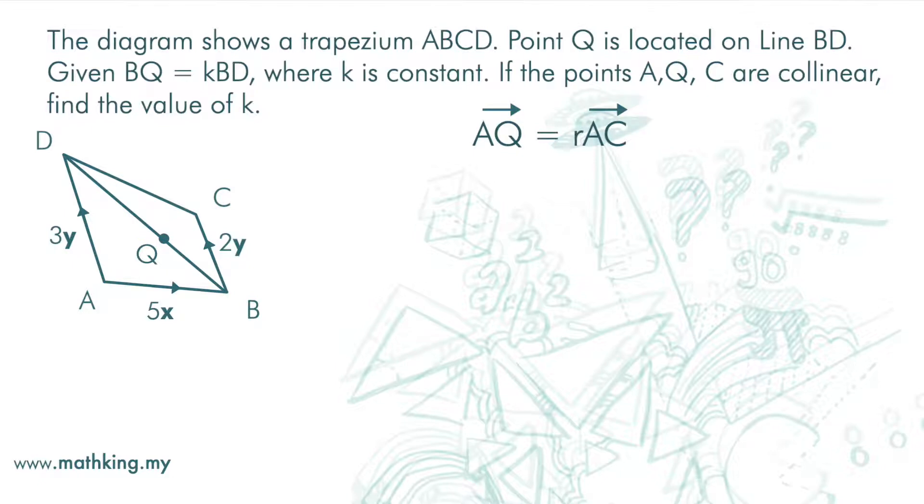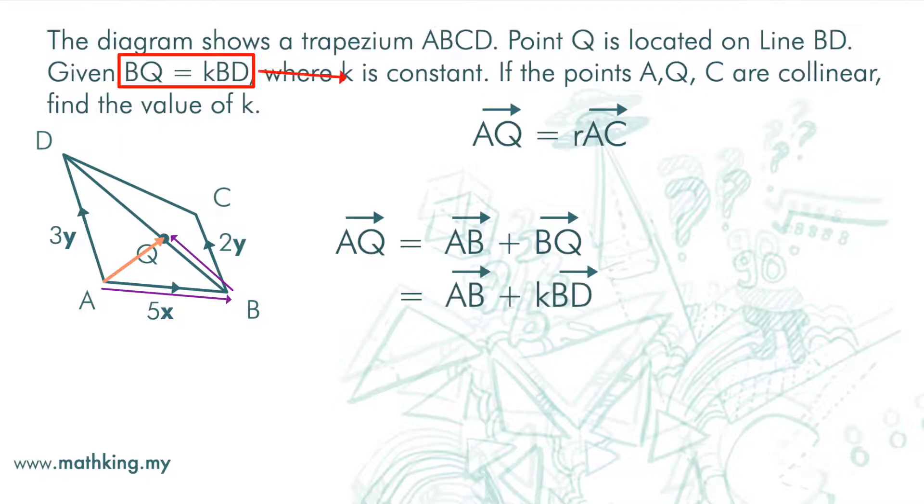So what we need to do now is to find vector AQ and vector AC. Vector AQ is AB plus BQ, and this is AB plus KBD. We do not know K yet. We want to find K.